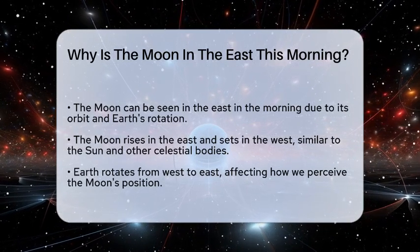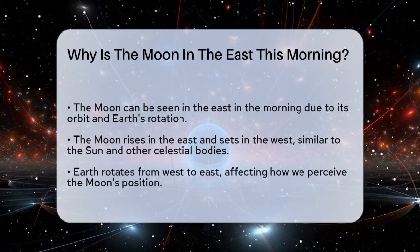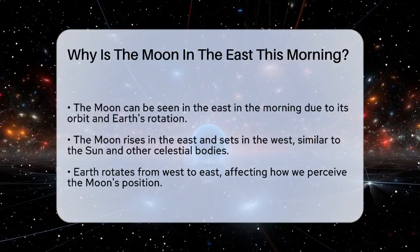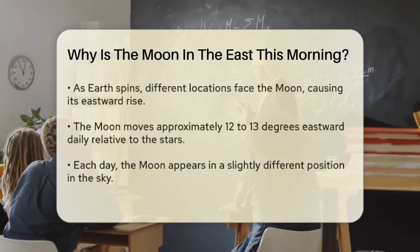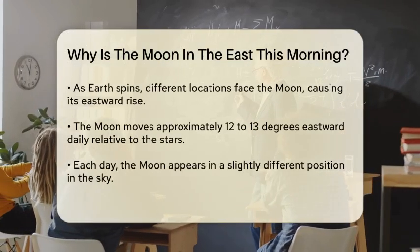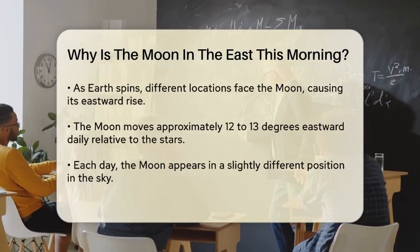This happens because Earth rotates from west to east. As Earth spins, different parts of the planet face towards or away from the moon, causing it to appear to rise in the east and set in the west from our perspective.